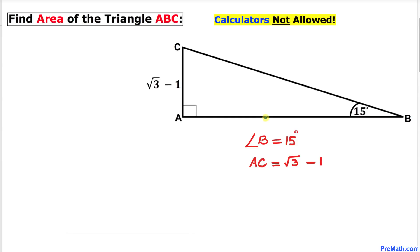Welcome to pre-math. In this video tutorial we have got a right triangle ABC such that angle B is 15 degrees, side length AC is √3 minus 1, and we are going to calculate the area of this triangle ABC. Moreover, we are not supposed to be using calculators of any kind, and furthermore we will not be using trigonometry as well.